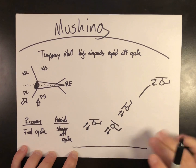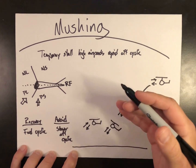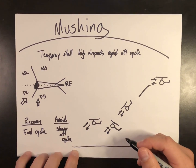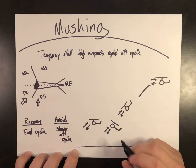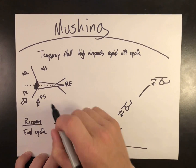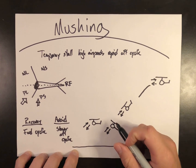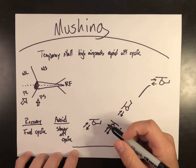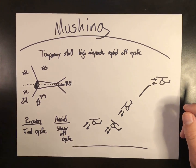That wraps up mushing. It's a temporary stall condition predominantly experienced during aggressive aft cyclic, most common with dive recoveries. Thank you all for watching. If you need more clarity on the five regions of airflow, be sure to check out my video Dissymmetry of Lift Expanded where I break that down further. If you found this video helpful or informative, be sure to hit like, subscribe, and leave a comment below. As always, I'm Jacob — this is Helicopter Lessons in 10 Minutes or Less. Safe flying.